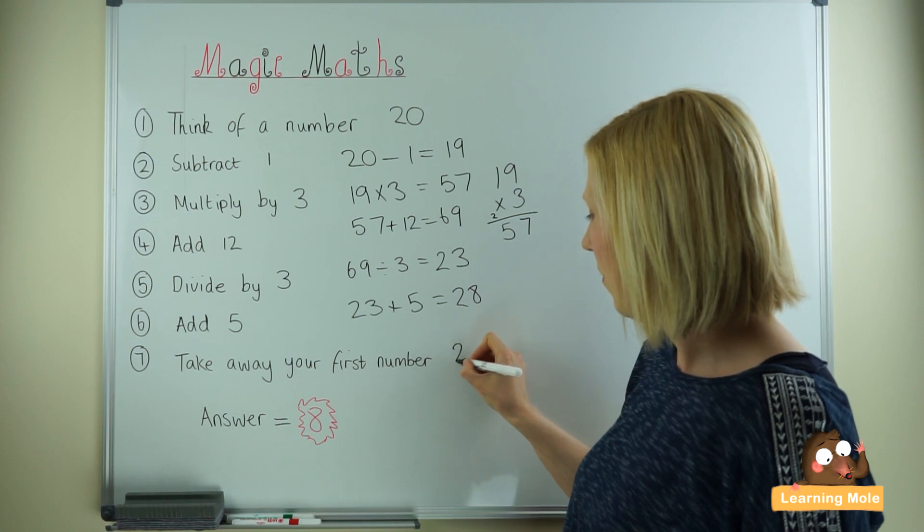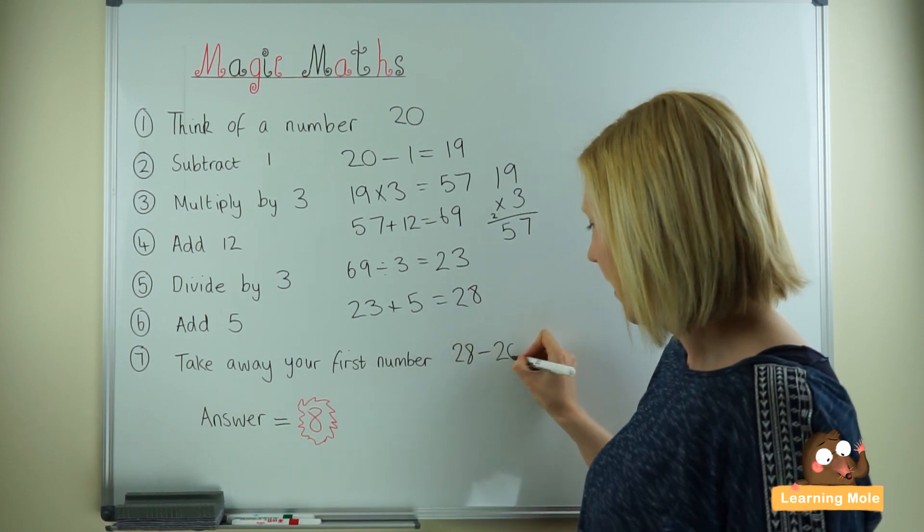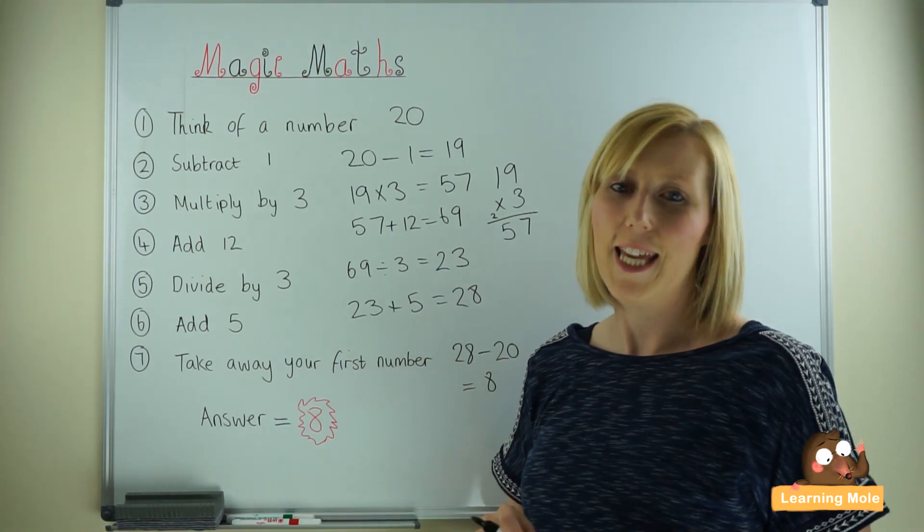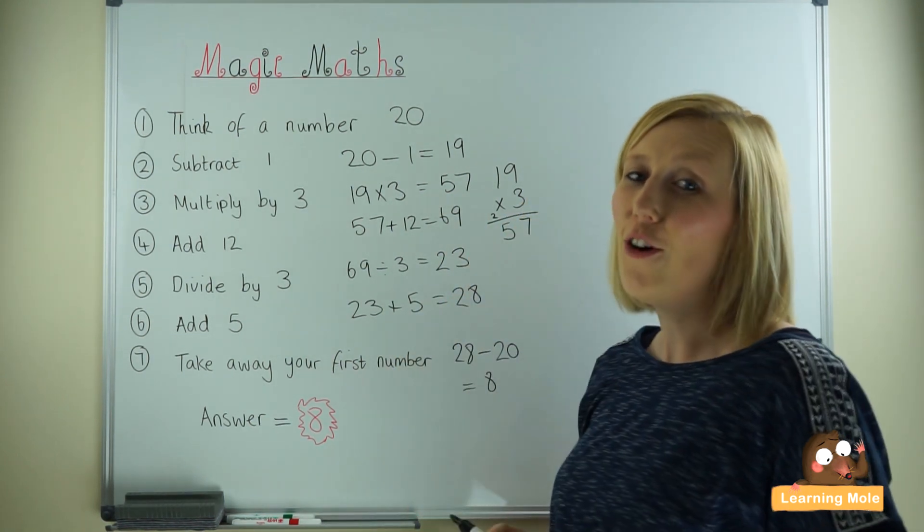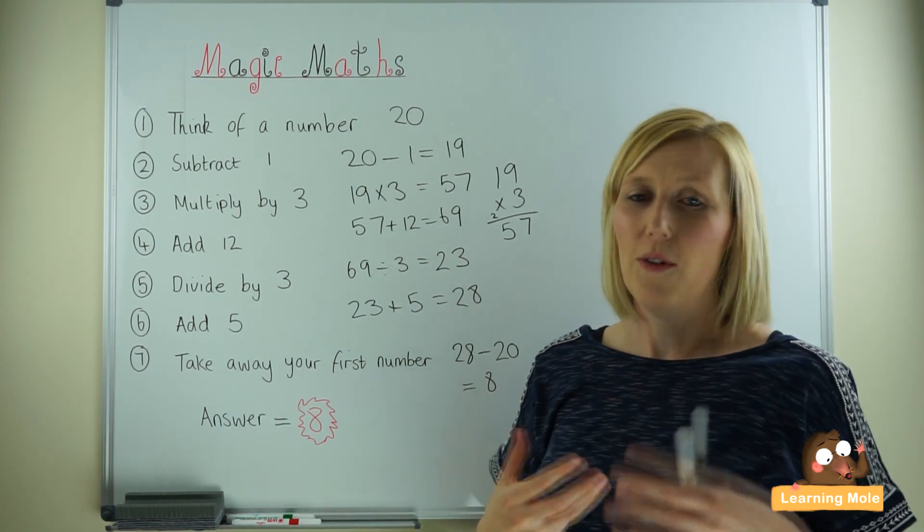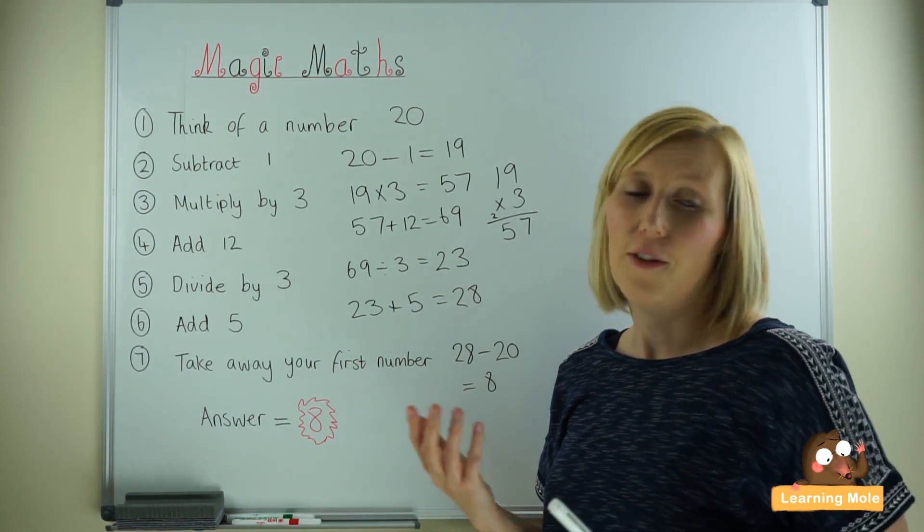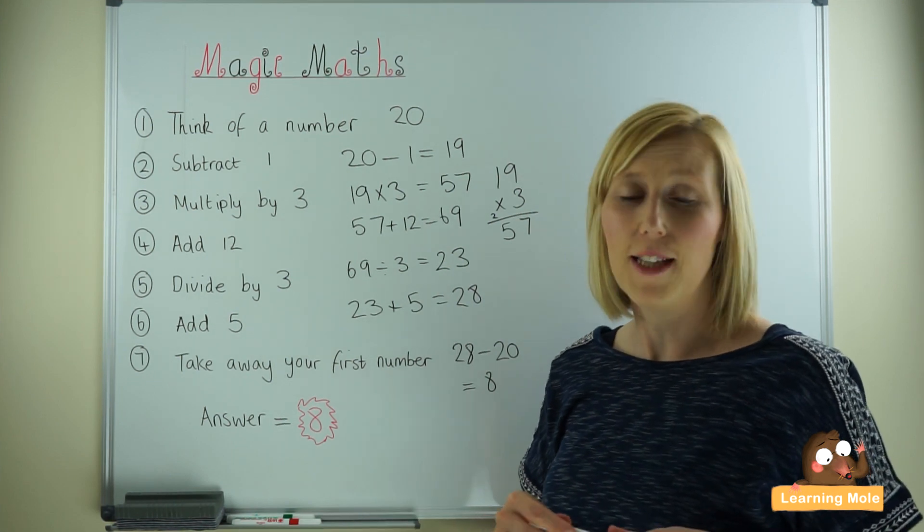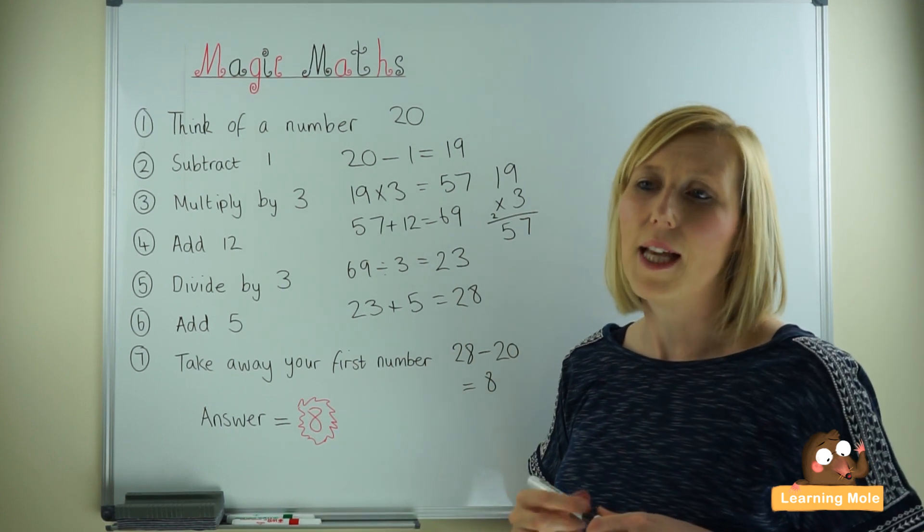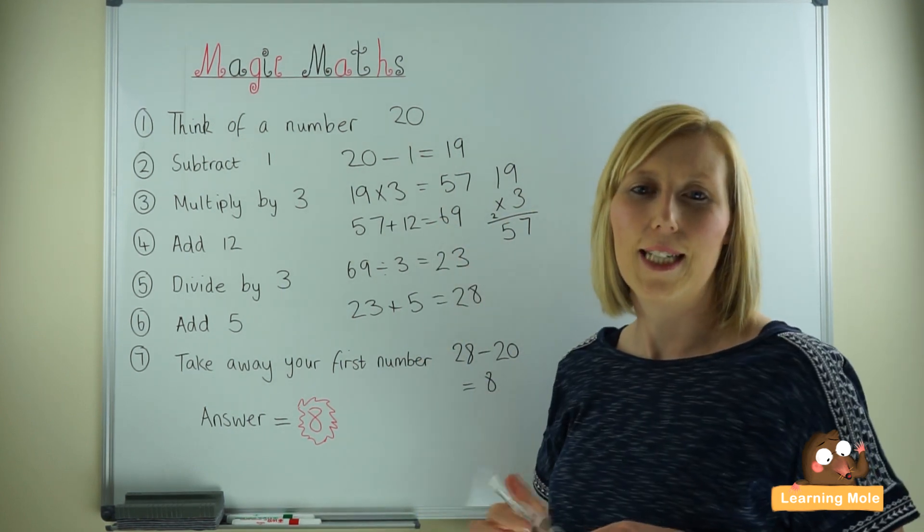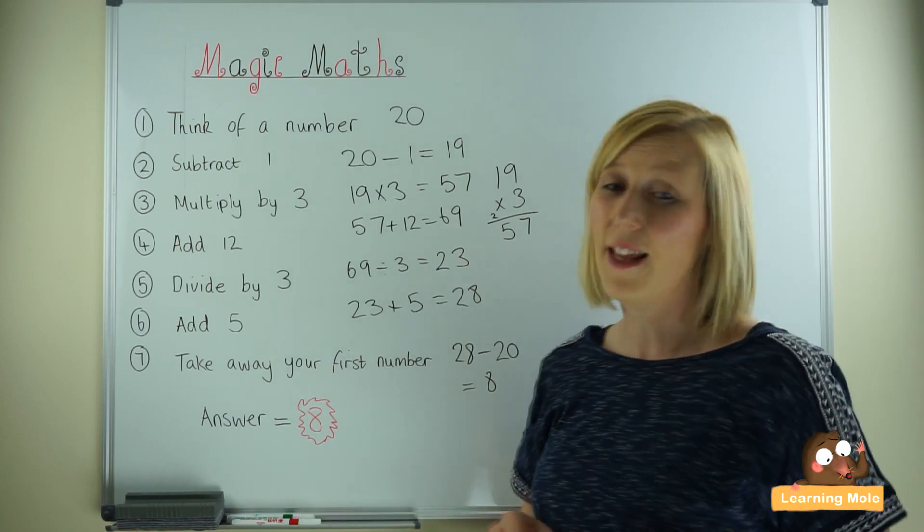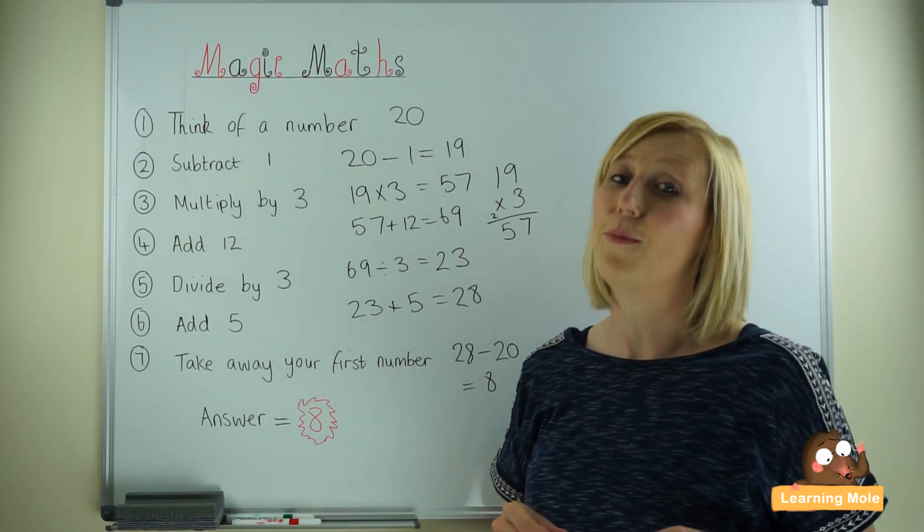Take away your first number, and hey presto, my answer is 8. So what you would do is then send your child off with this little list of rules. Ask them to go around asking adults or friends of the family or their friends in school, and they go through all these steps. They will be able to tell them your answer is going to be 8, and they will know straight away if the answer is not 8 then they know that the adult has made a mistake.